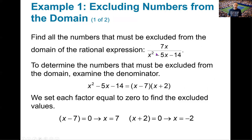As an example, consider 7x over x squared minus 5x minus 14. Am I ever concerned about the numerator of my rational expression? No — as long as it's a polynomial, I know a polynomial exists everywhere. I could care less about the numerator. What I care about is that denominator, because even though it's also a polynomial, if it's ever equal to zero that fraction cannot exist because any number divided by zero is undefined.